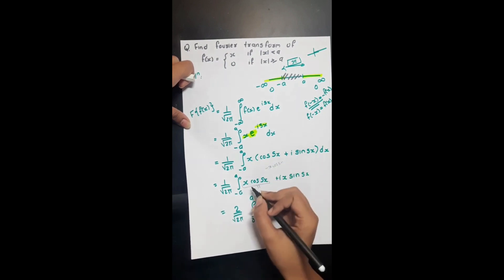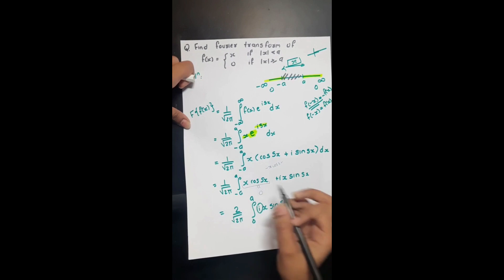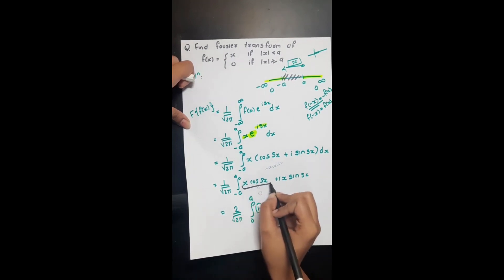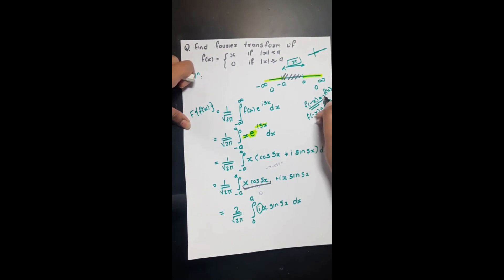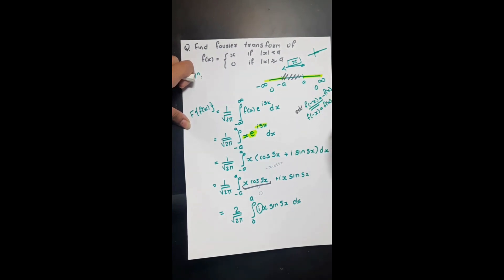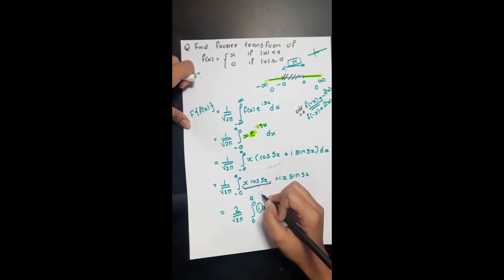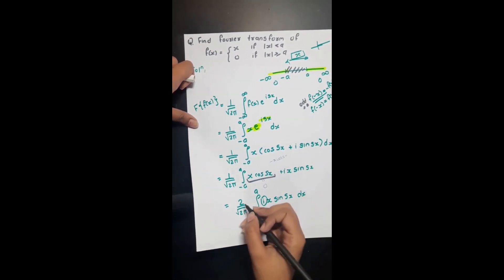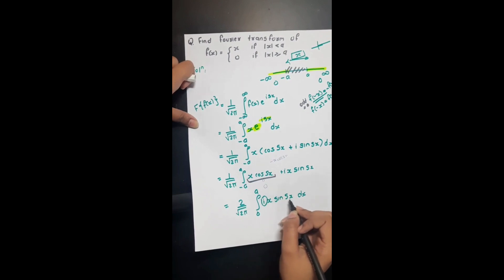Now, x·cos(sx) is an odd function. An odd function satisfies f(−x) = −f(x), and the integration of an odd function over a symmetric interval is always zero. So I'm directly putting that part as zero, and writing the remaining integral as 2i times the integral from 0 to a of x·sin(sx) dx.